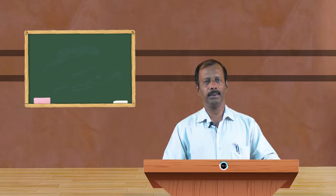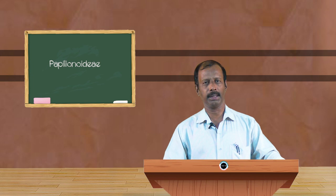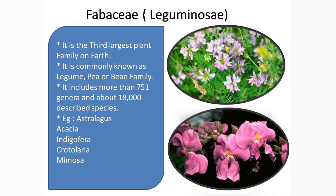In this session, I am going to deal with one of the sub-families of Fabaceae, that is Papilionidae. Fabaceae is considered as one of the largest families in the angiospermae — in fact, it is the third largest family in the plant kingdom. This family contains approximately 751 genera and around 19,000 different species. For the sake of convenience, Fabaceae has been classified into three sub-families.